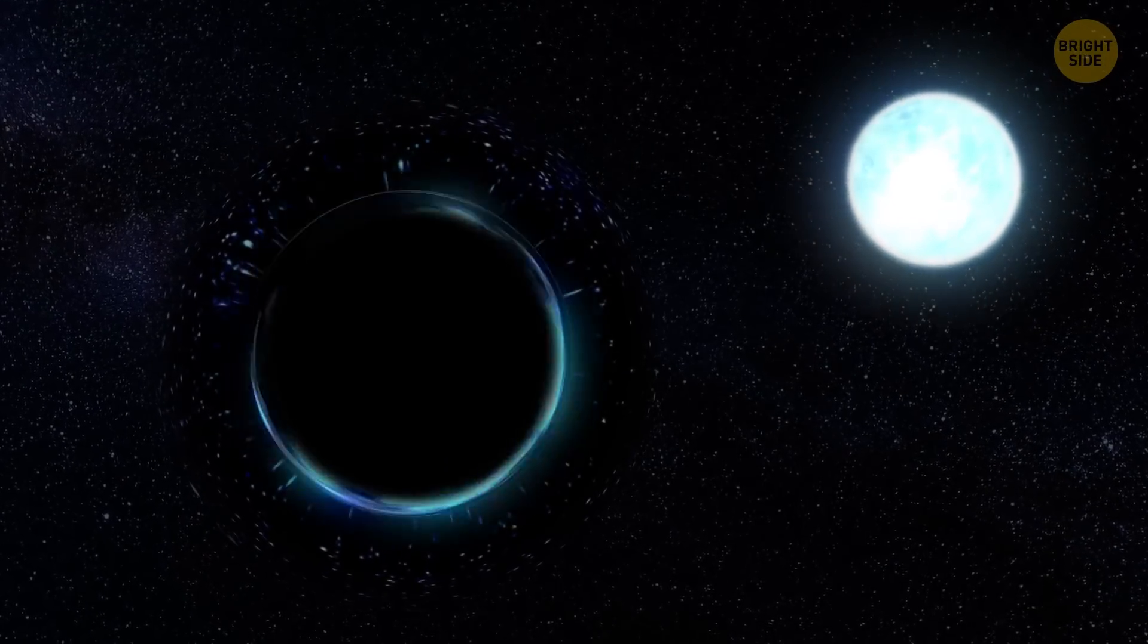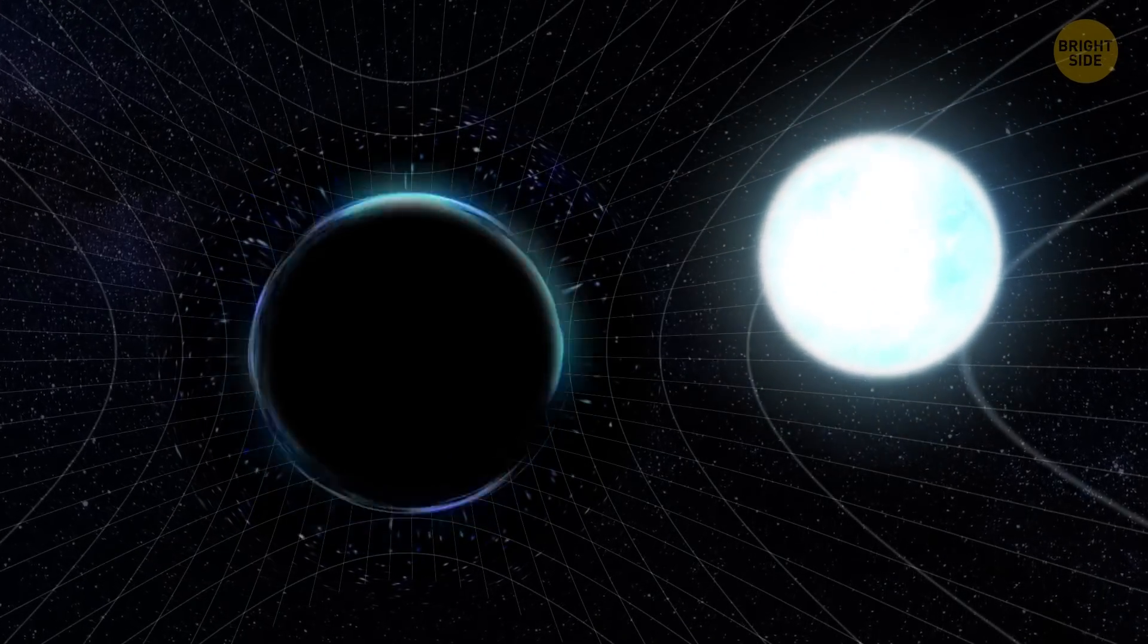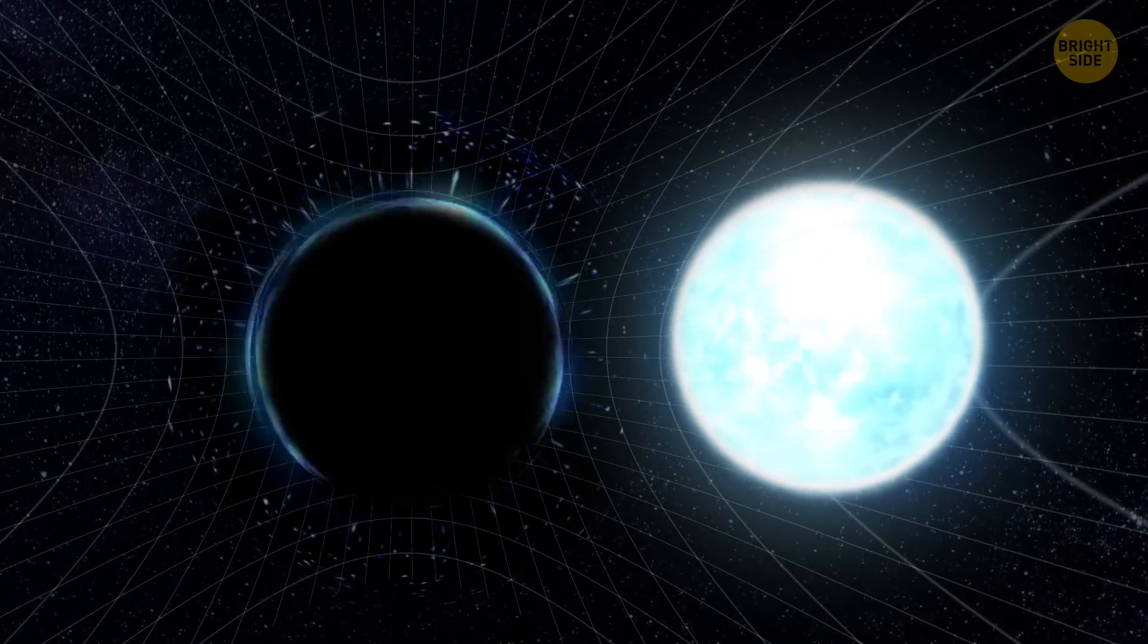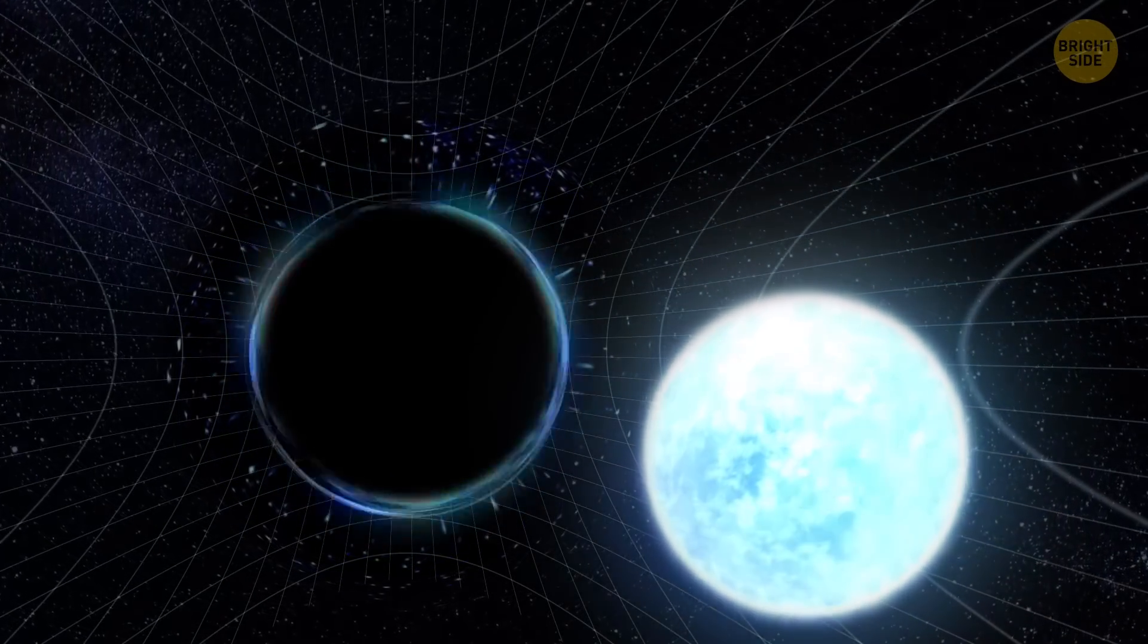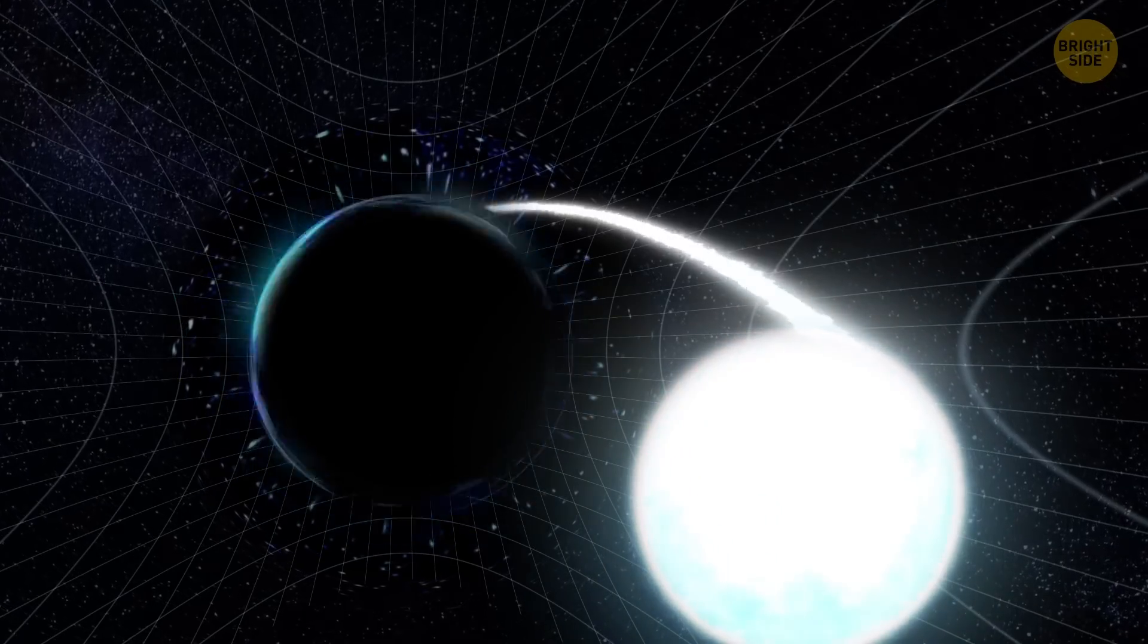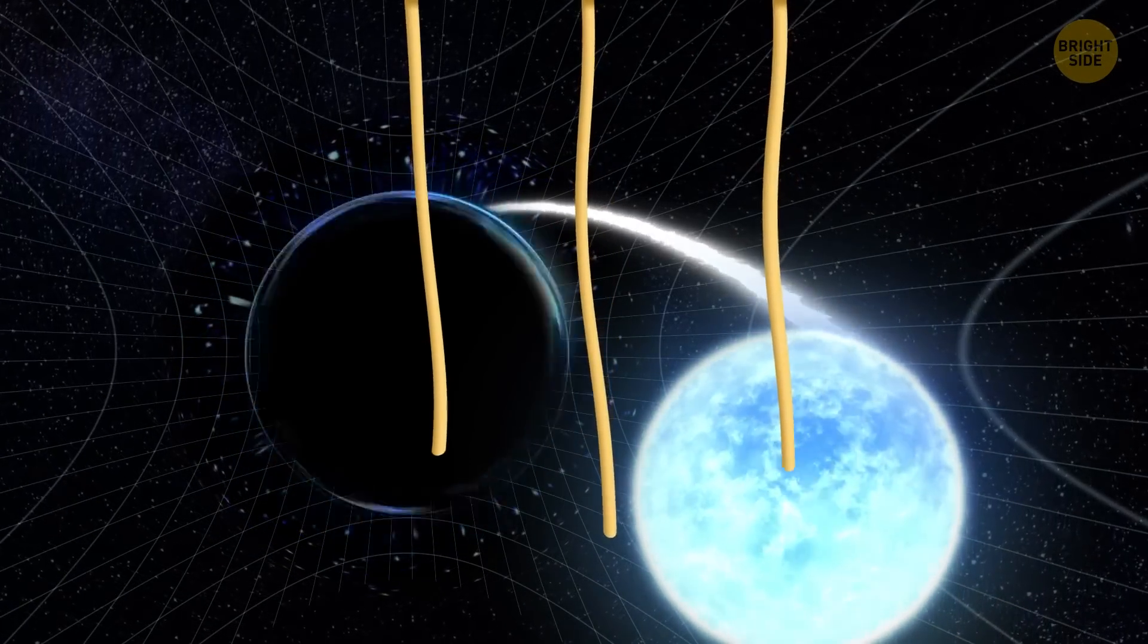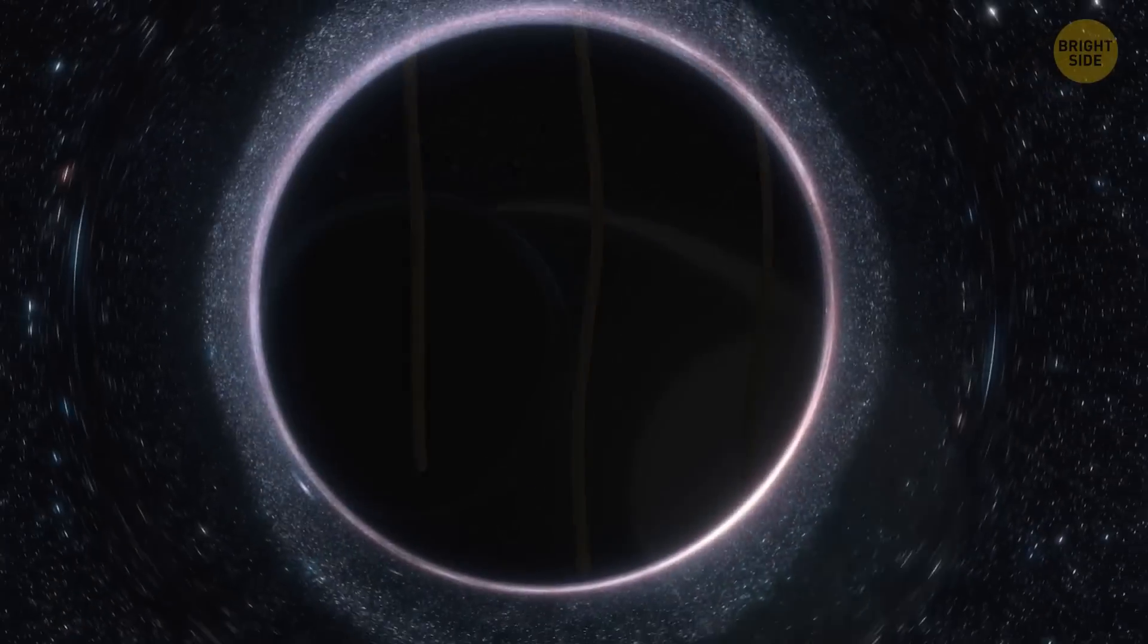As soon as a star enters the gravitational field of a black hole, it has no chance. At first, it tries to resist the pull of the black hole. Still, the star's outer layers begin to stretch toward the black hole, just like spaghetti. This is due to a powerful force of attraction.